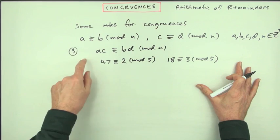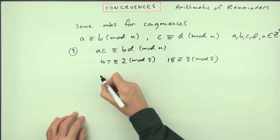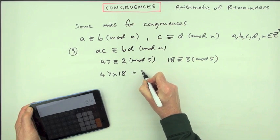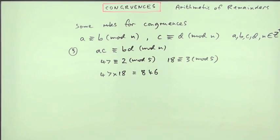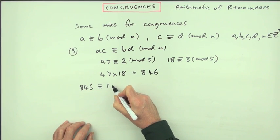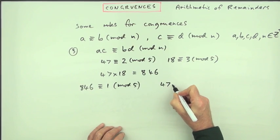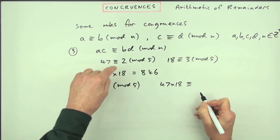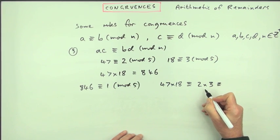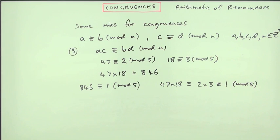Now what about the last one? The principle for multiplication. The remainder of the product is equal to the product of the remainders. Test it for this here. 47 times 18 is 846. Now 846 is congruent to 1 mod 5. Now 47 times 18 should be congruent to 2 times 3, which is 6. And 6 is congruent to 1 when you divide 6 by 5. The multiplication principle.